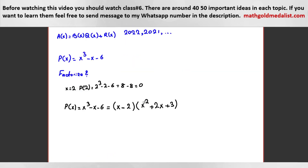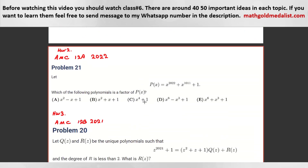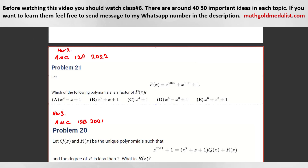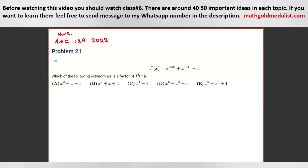Can you solve this AMC problem? Good job — completely correct. For E, the remainder is zero. Have you found the remainders when divided by A, B, C, D? Can you tell me the remainders for A, B, C, D to check?